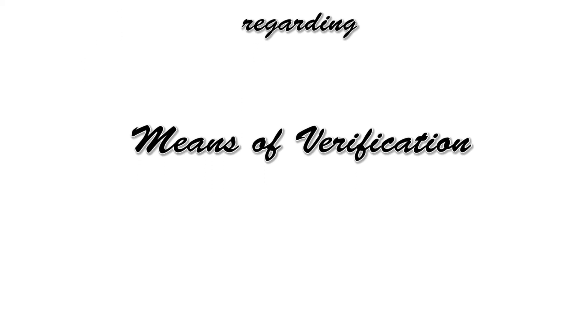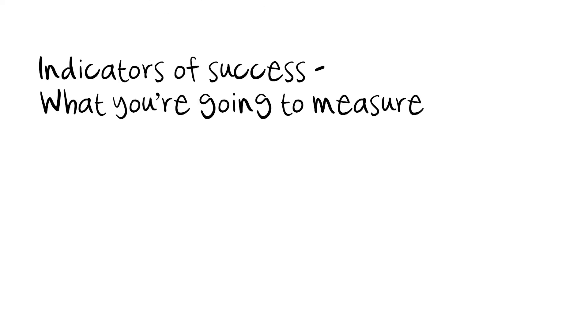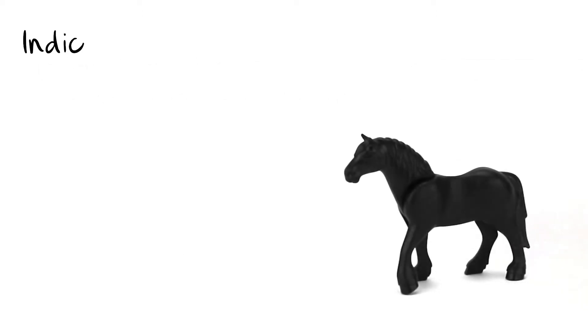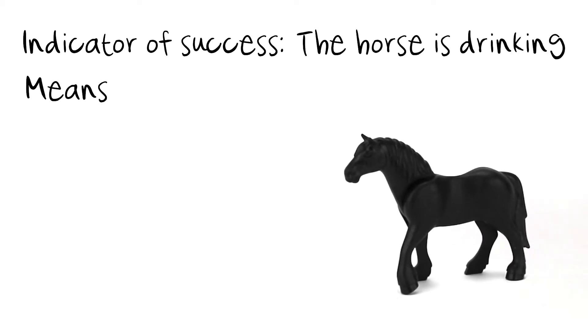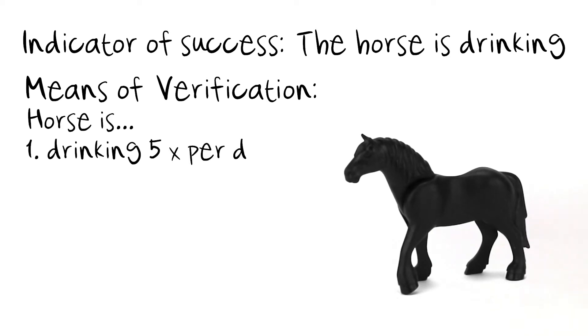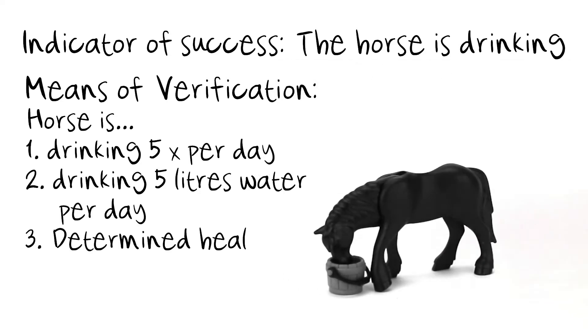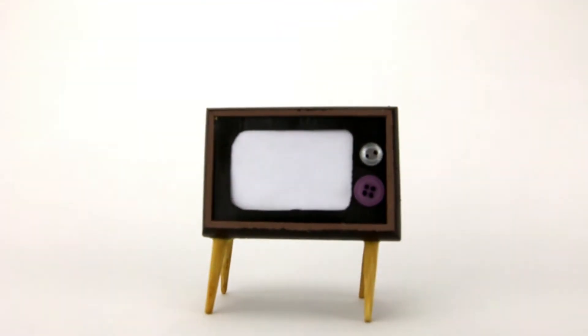Each indicator needs a corresponding means of verification. The indicator tells you what you're going to measure, while the means of verification tells you how you're going to measure it. For example, if your indicator is something like 'the horse is drinking,' your means of verification could be documenting how often the horse is seen drinking, or the volume of water being consumed by the horse, or objective measurable improvements in the horse's health due to hydration. Whatever you plan to use as a means of verification, it needs to be written into your plan so you can set aside the time and money needed to take the measurement.